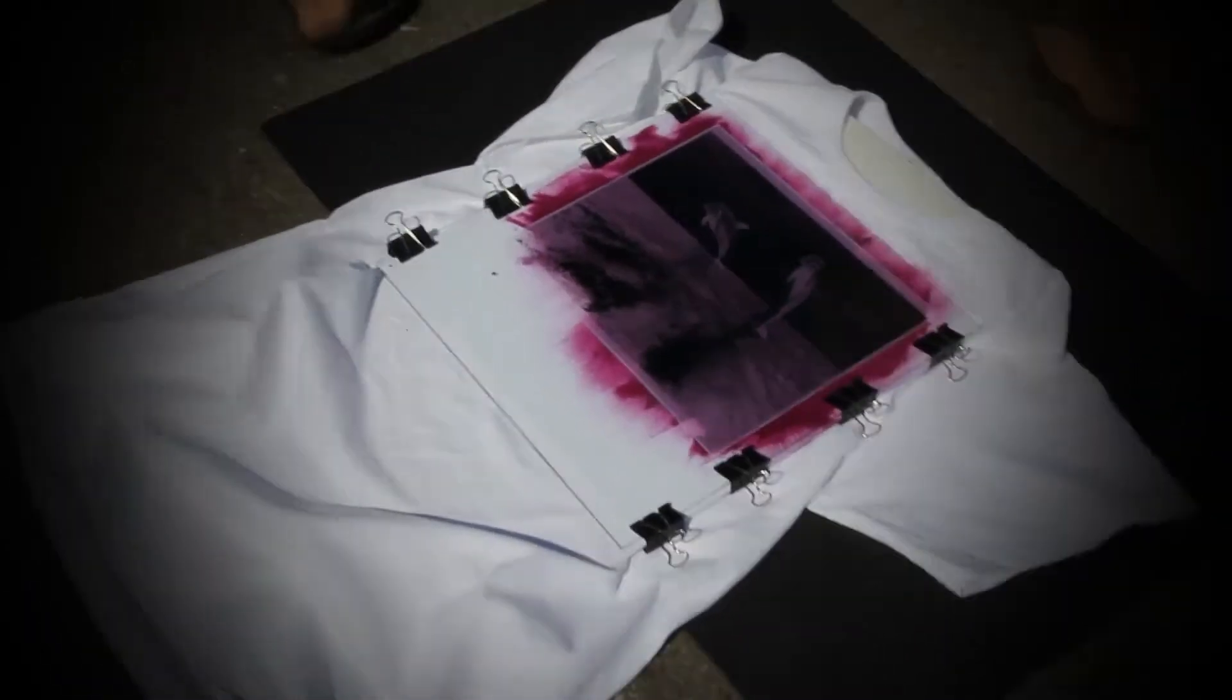Exposure times vary depending on the color and the weather conditions. Usually, it's about 10 to 20 minutes. The best time to make a print is in the middle of the day. After exposing, bring the shirt back inside.